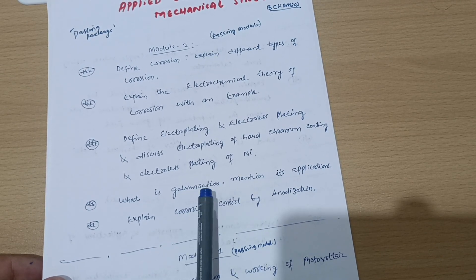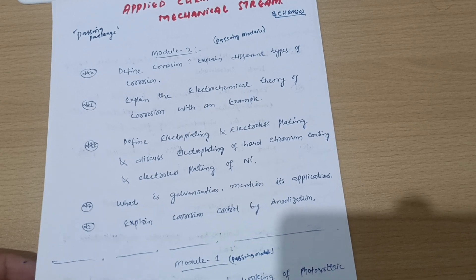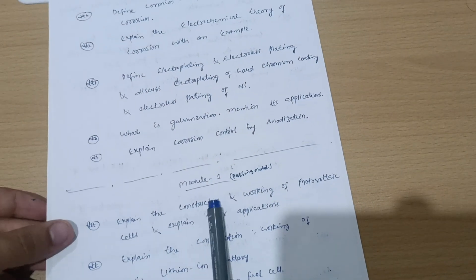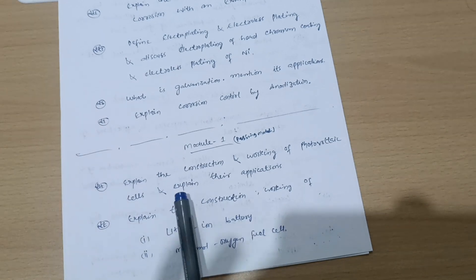Next is what is galvanization, mention its applications, explain corrosion control by anodization. These are the five questions which you have to cover from Module 2, most super important questions.